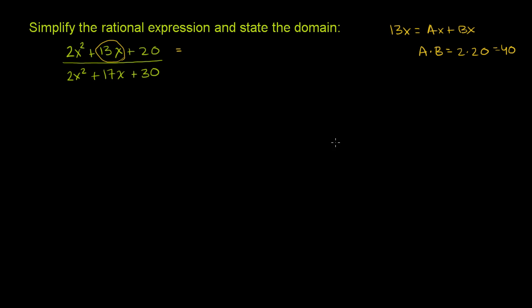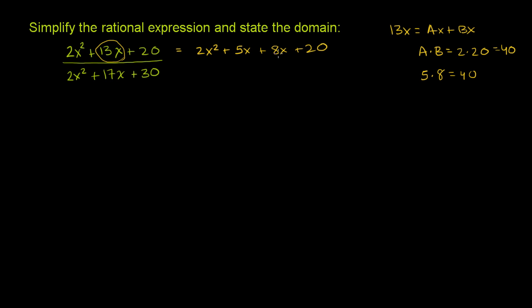So a times b needs to equal 40, and a plus b needs to equal 13. Looking at factors of 40: 1 and 40 don't work; 2 and 20 don't work; 4 and 10 don't work. But 5 and 8: 5 times 8 equals 40, and 5 plus 8 equals 13. So let's split 13x into 5x plus 8x, giving us 2x² plus 5x plus 8x plus 20.